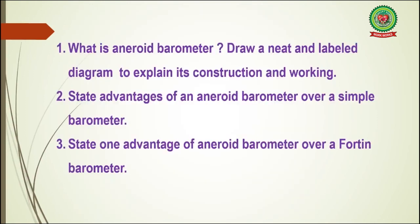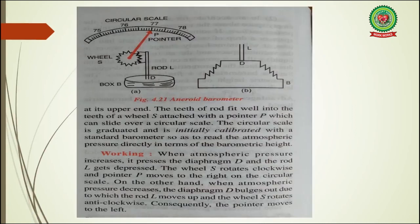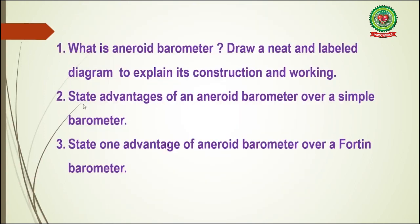Now students, you are able to answer the following questions. Number 1: What is an aneroid barometer? Draw a neat and labelled diagram to explain its construction and working — here you have to draw the diagram given in your book, figure 4.21. Number 2: State the advantages of an aneroid barometer over a simple barometer. Question number 3: State one advantage of an aneroid barometer over a Fortin barometer. That's the end of the topic. Thank you.